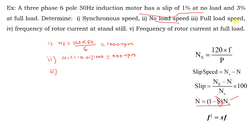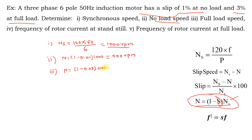Third, find full-load speed. ns is fixed at 1000 rpm and slip at full load is 3%, so s = 0.03. Full-load speed = (1 − 0.03) × 1000 = 970 rpm.